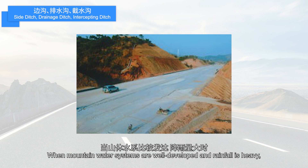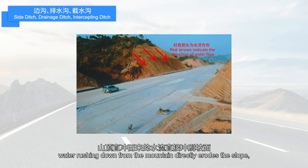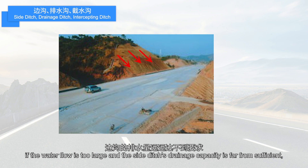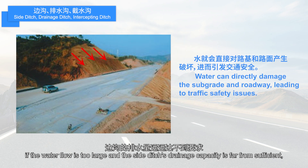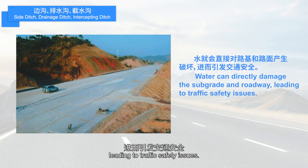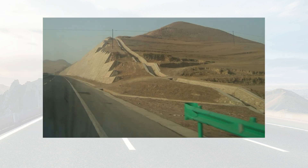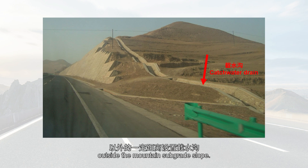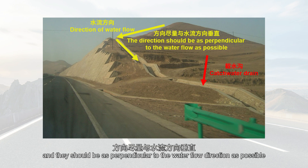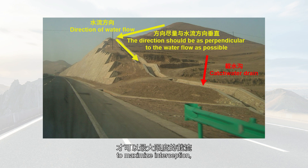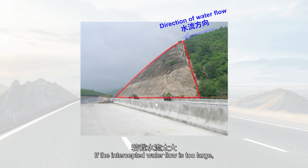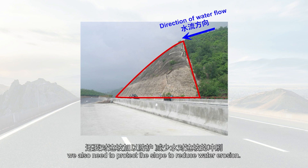When mountain water systems are well developed and rainfall is heavy, water rushing down from the mountain directly erodes the slope, causing mudslides. At the same time, if the water flow is too large and the side ditch's drainage capacity is far from sufficient, it will directly damage the subgrade and surface, leading to traffic safety issues. In such cases, we should set up catch water drains at a certain distance outside the mountain subgrade slope. Their main function is to intercept water flow, and they should be as perpendicular to the water flow direction as possible to maximize interception, thereby reducing the drainage pressure on the side ditch. If the intercepted water flow is too large, we also need to protect the slope to reduce water erosion.